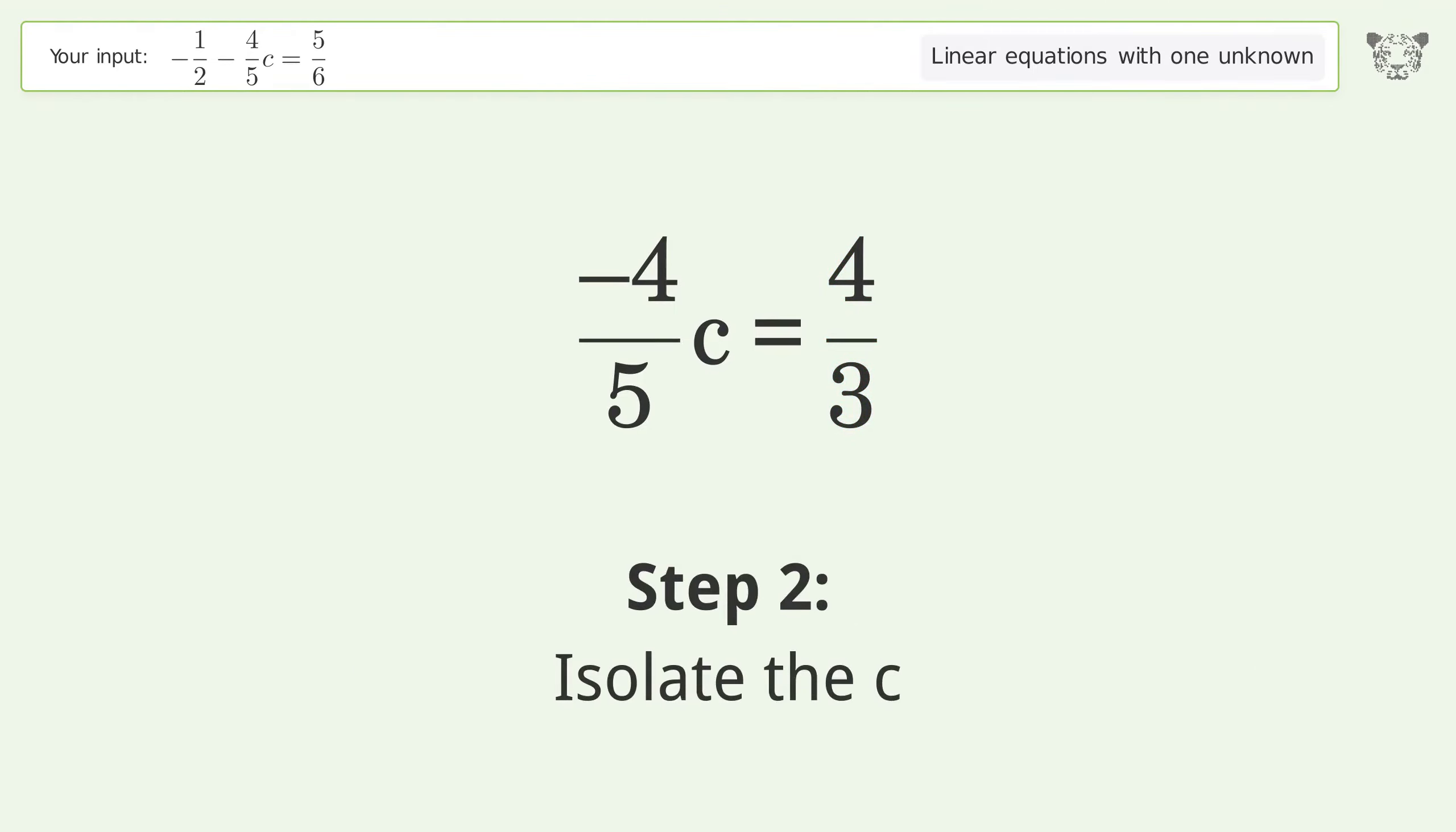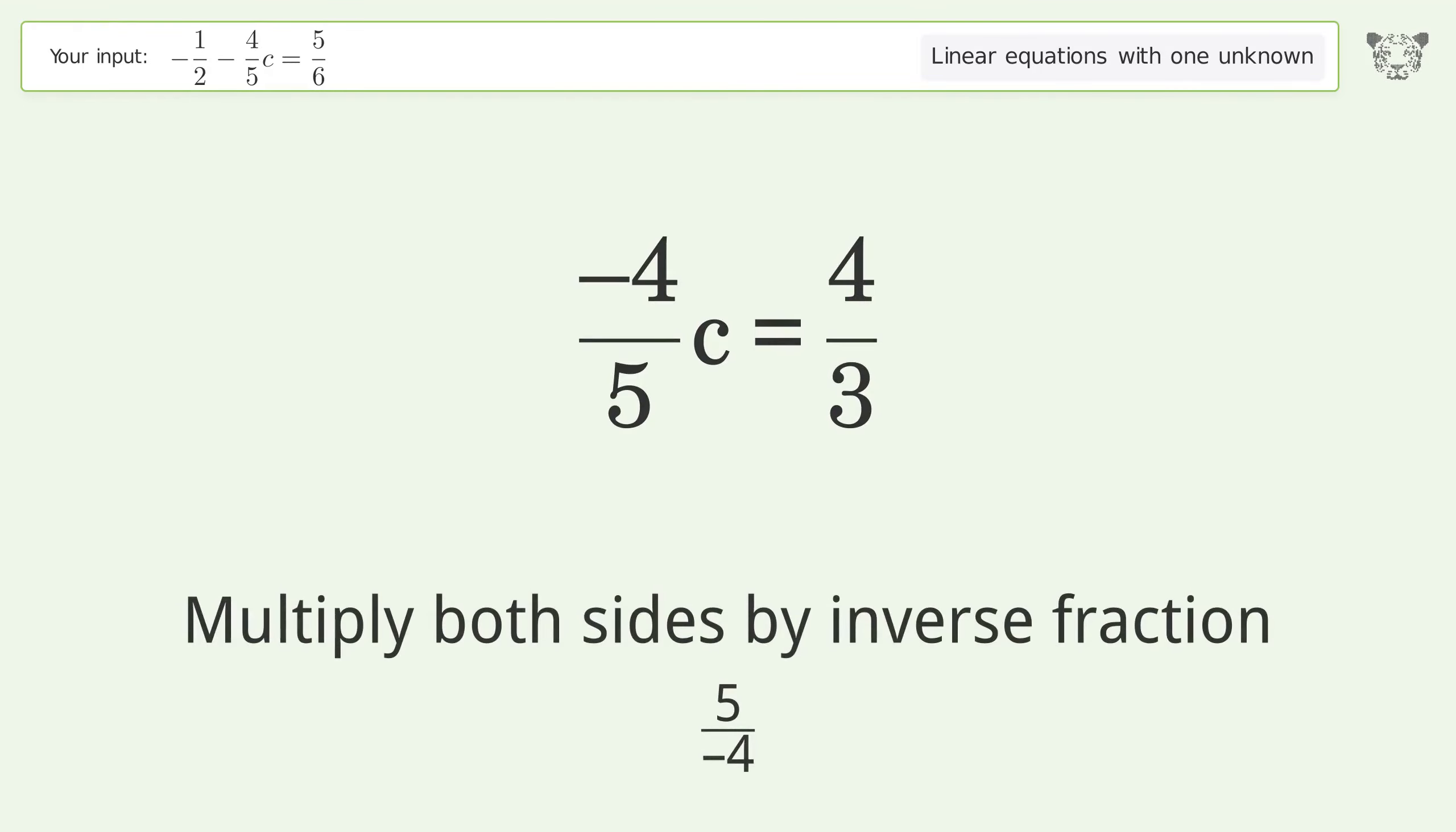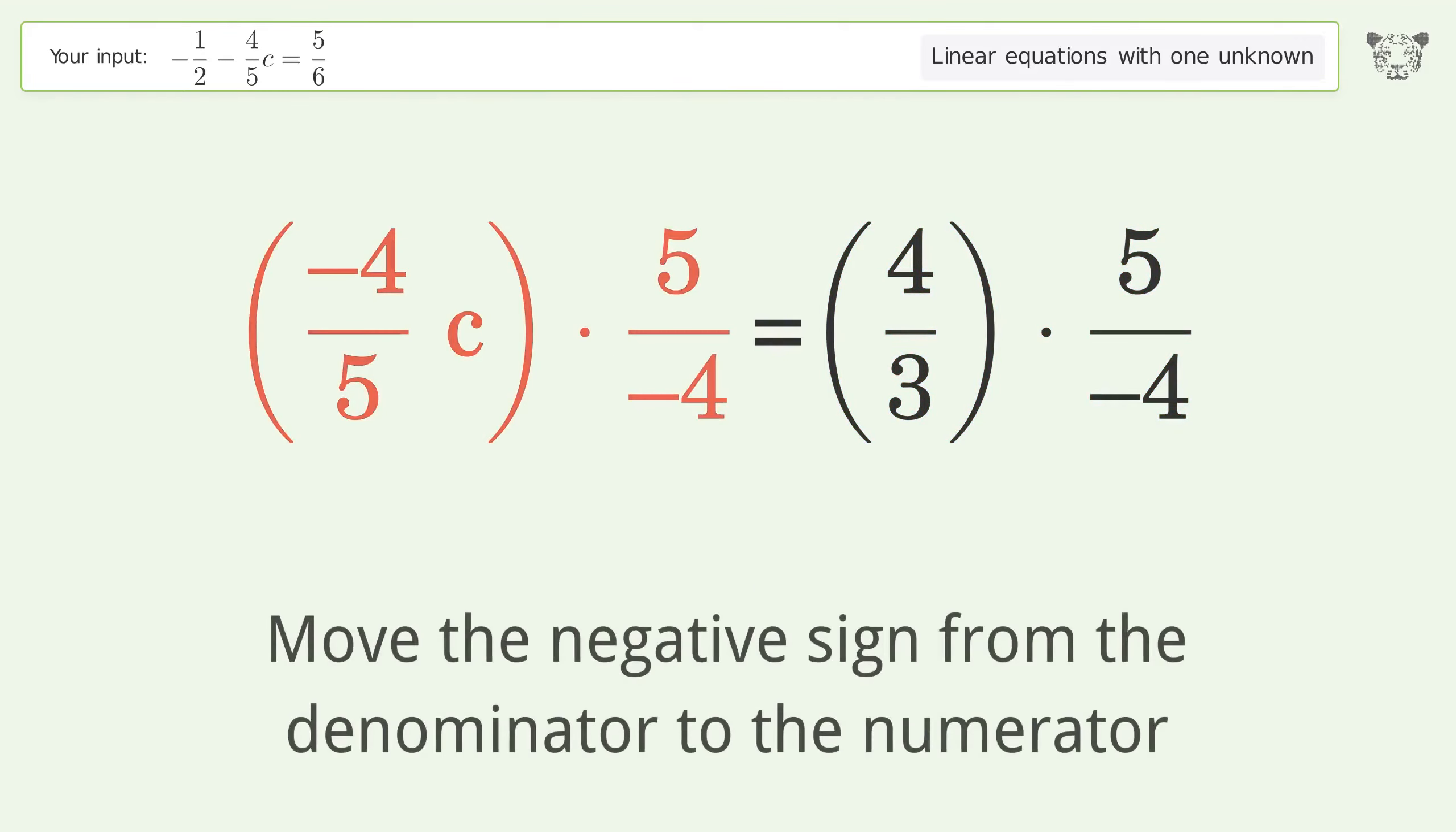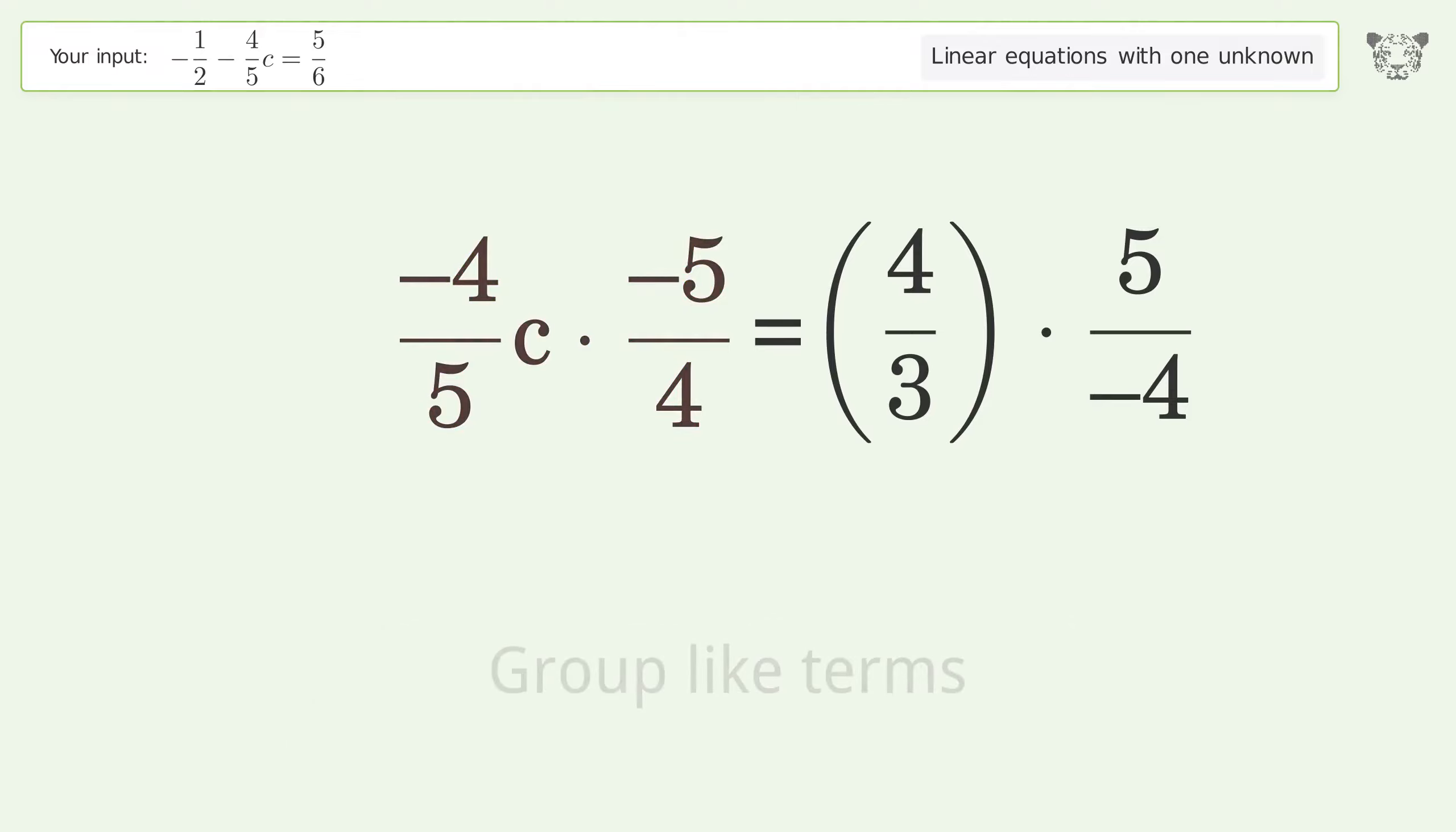Isolate the c. Multiply both sides by the inverse fraction 5 over negative 4. Move the negative sign from the denominator to the numerator. Group like terms.